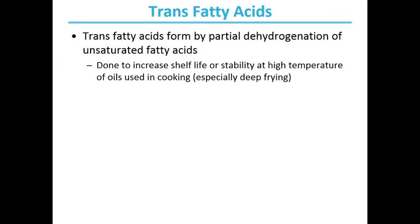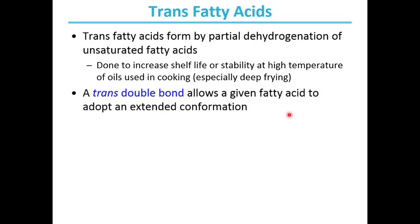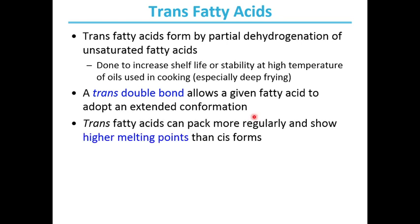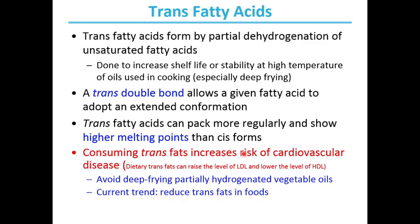Trans fatty acids are formed by partial hydrogenation of unsaturated fatty acids, usually done to increase shelf life or stability at high temperatures of oils used in cooking, especially deep frying. A trans double bond allows a fatty acid to adopt an extended conformation, just like saturated fatty acids, so trans fatty acids pack more regularly and show higher melting points than cis forms. Consuming trans fatty acids increases the risk of cardiovascular diseases because dietary trans fat can raise the level of LDL and lower the level of HDL. Hence, avoid deep frying partially hydrogenated vegetable oils.